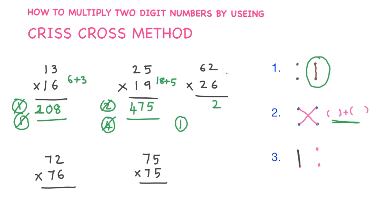Now, multiply the cross-element. 6 sixes are 36 plus 2 twos are 4. 36 plus 4 is 40. 40 plus 1 is 41. As it is a 41 two-digit number, I will write 1 here, 4 aside.